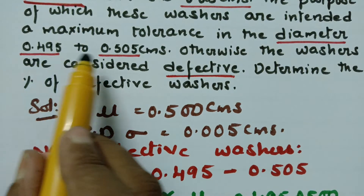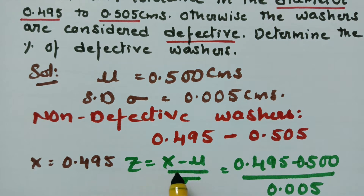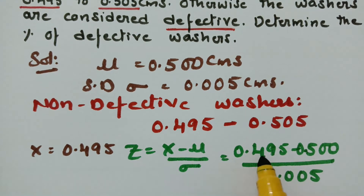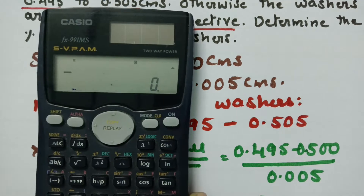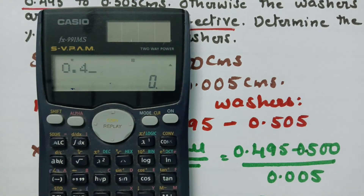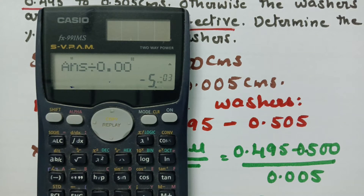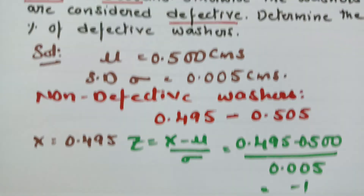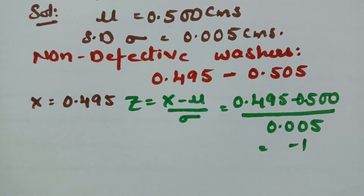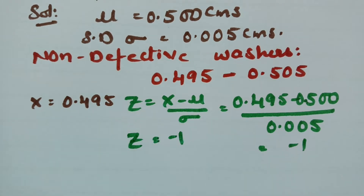From the question, when x is equal to 0.495, what will be the z value? That is z = (0.495 minus 0.500) divided by 0.005, which is equal to minus 1. So the z value is minus 1 when x is equal to 0.495.